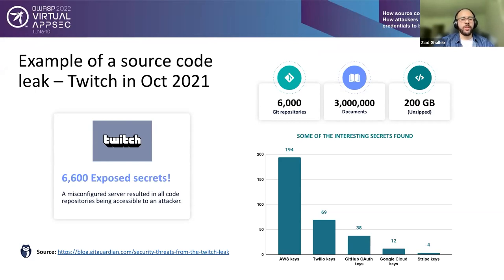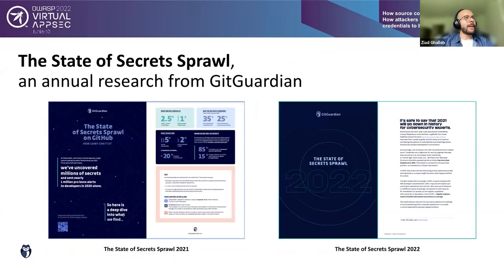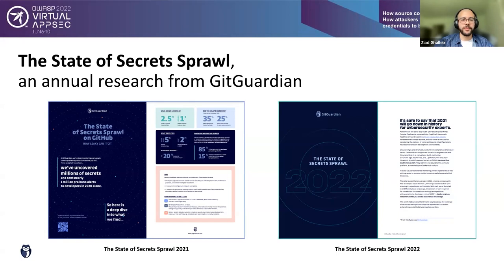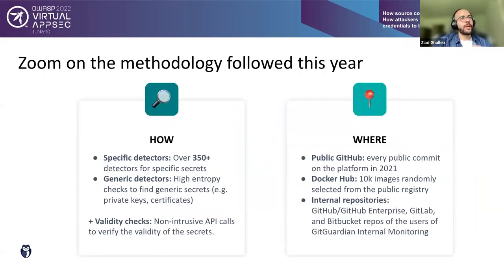You can read more on the GitGuardian blog about this source code leak. At GitGuardian we produce an annual research report on the state of secret sprawl, examining credential leakage in public spaces. In 2021 we looked at public GitHub, and in 2022 we also looked at Docker Hub and private git repositories. Let me share some findings, but first let's review the methodology.